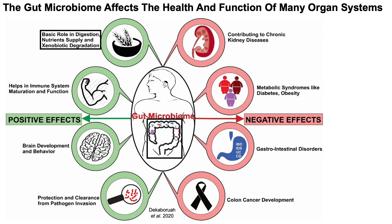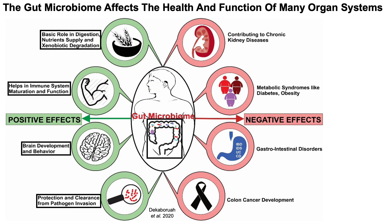The gut microbiome also impacts the immune system — immune system maturation and function — and it also impacts the gut-muscle axis. Positive effects also include brain development and behavior, and then protection and clearance from pathogen invasion.